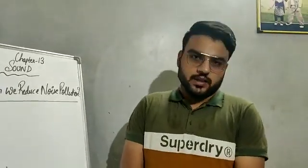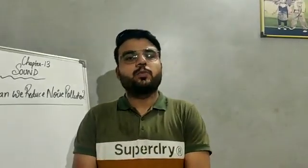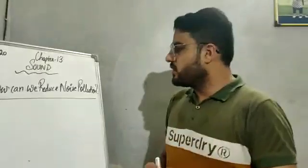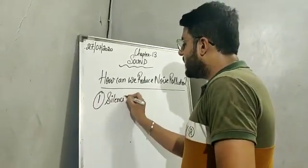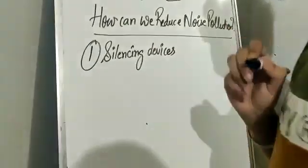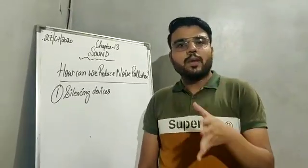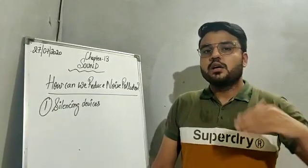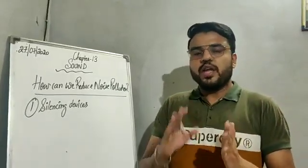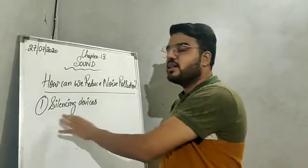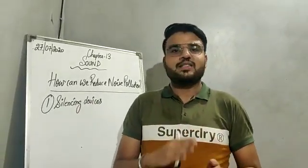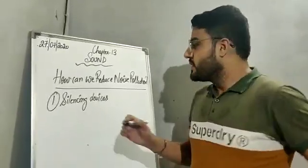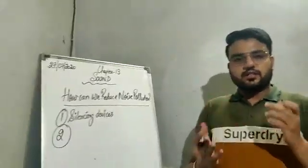So now, what can be done? How can we reduce or limit noise pollution? There are various easy methods. First of all, there should be silencing devices installed in automobiles and vehicles. You must have seen that previously automobiles produced very loud noises, but nowadays they produce comparatively less noise. That is because of the silencing devices installed in them, which reduce the unwanted noise produced by them.